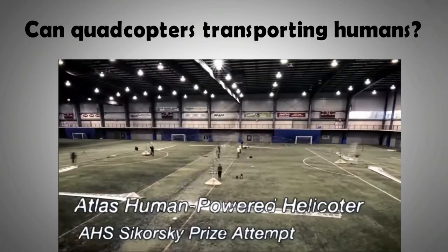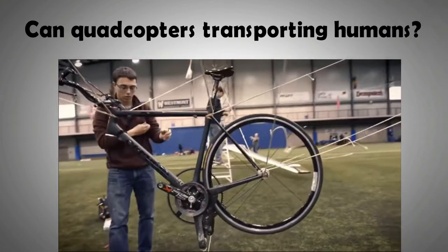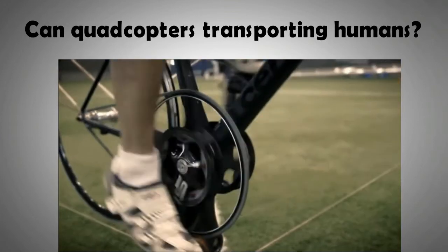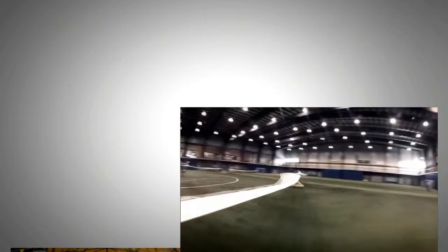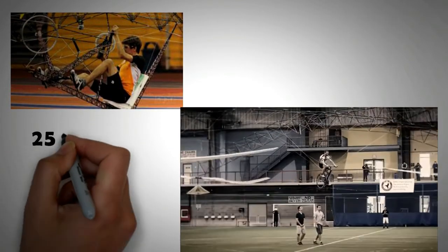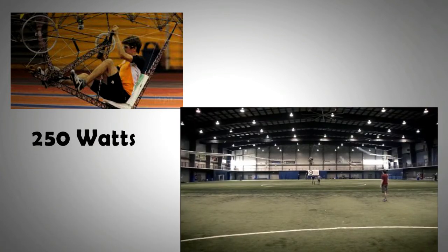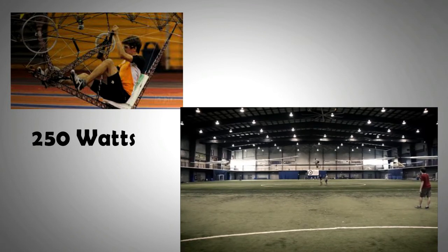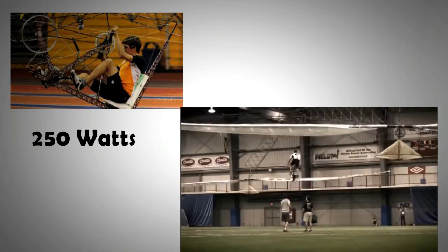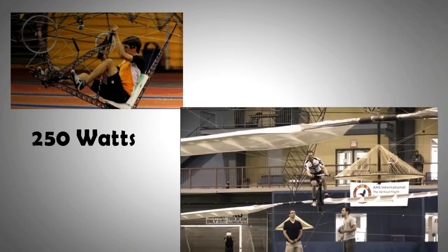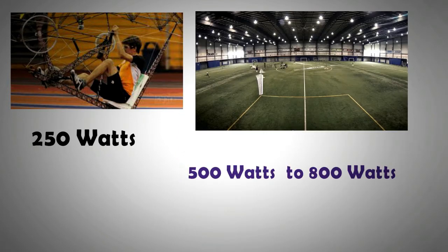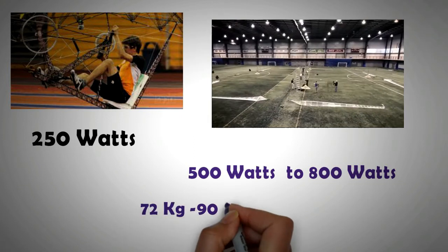A human-powered quadcopter has been fabricated and achieved flight. Students from Maryland University designed a 36 kg quadcopter that achieved flight for several seconds. A trained cyclist can generate up to 250 watts for periods longer than a minute, and the video shows that with this power, hovering is possible. With around 250 watts, not only was the person being lifted but also the weight of the quadcopter. Using this data, it can be ascertained that 500 watts would be sufficient to lift a person of average weight with a quadcopter weighing around 72 kilos.